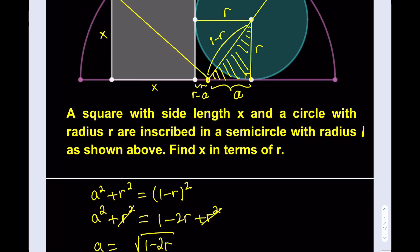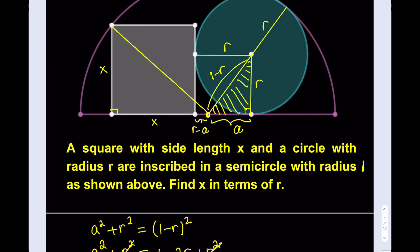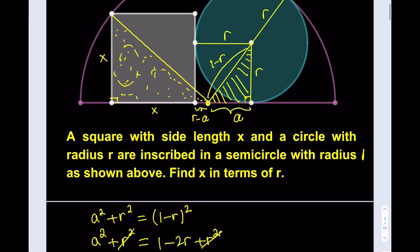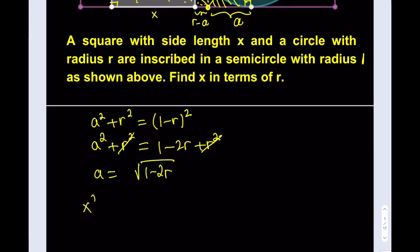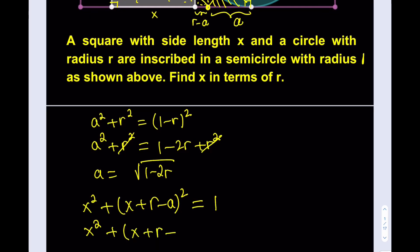Now we're going to write the Pythagorean theorem one more time using another right triangle — this big one here. The hypotenuse is 1, the radius of the semicircle. The height is x, and the base is x + r − a. So we get: x² + (x + r − a)² = 1. Now we replace a with what it is: x² + (x + r − √(1 − 2r))² = 1.